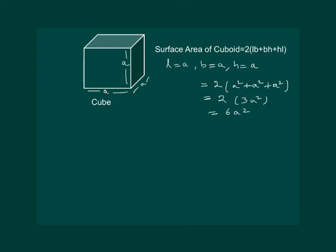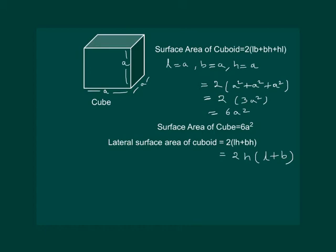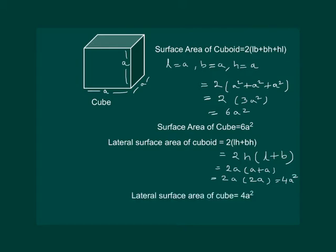Which is equal to 6a². So the surface area of a cube whose length, breadth and height are all equal to a is given by 6a². Similarly, for the lateral surface area of the cube, substituting L = a, B = a and H = a in the formula for lateral surface area of the cuboid, we get 2 × a × (a + a) = 2 × a × 2a = 4a². So the lateral surface area of a cube is equal to 4a².